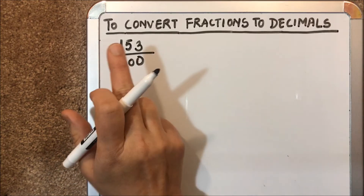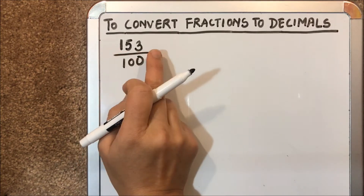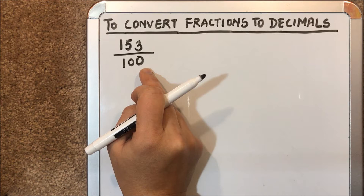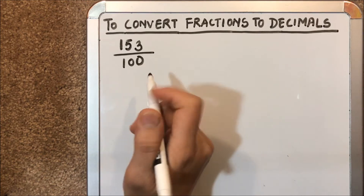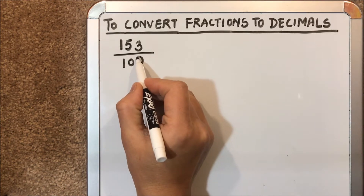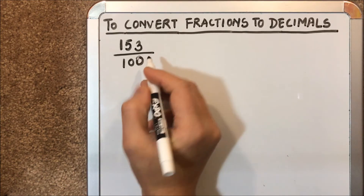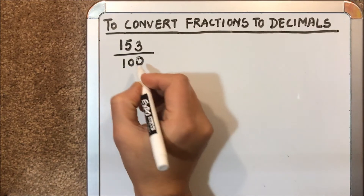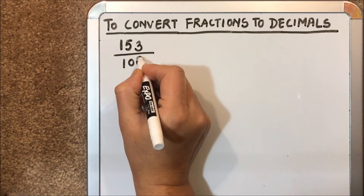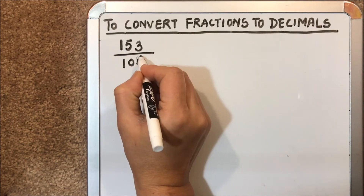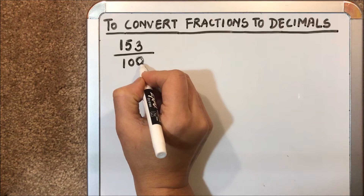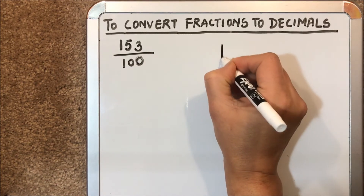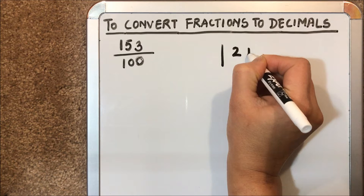Let's take the fraction 153 over 100. To convert it to a decimal, first we count the number of decimal places, which is determined by the number of zeros in the denominator. Here the number of zeros is 2, so we have 2 decimal places.